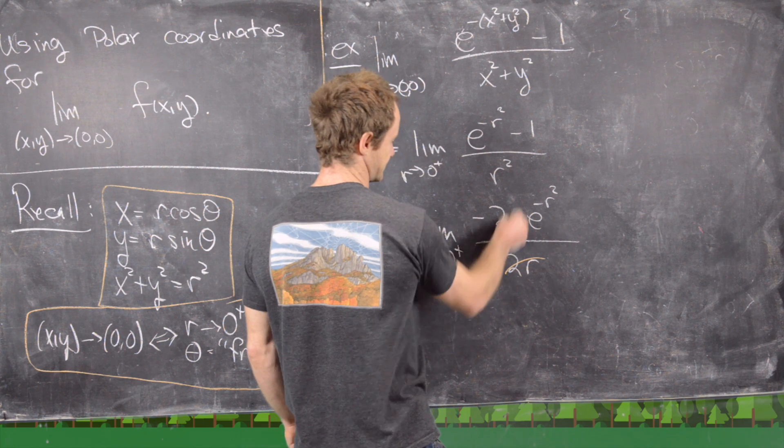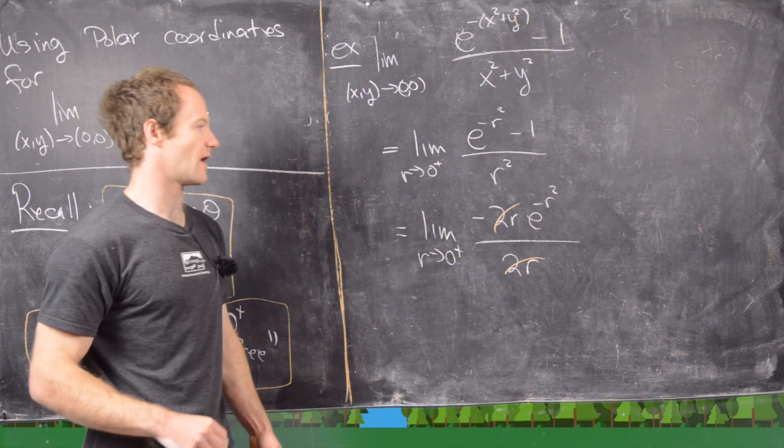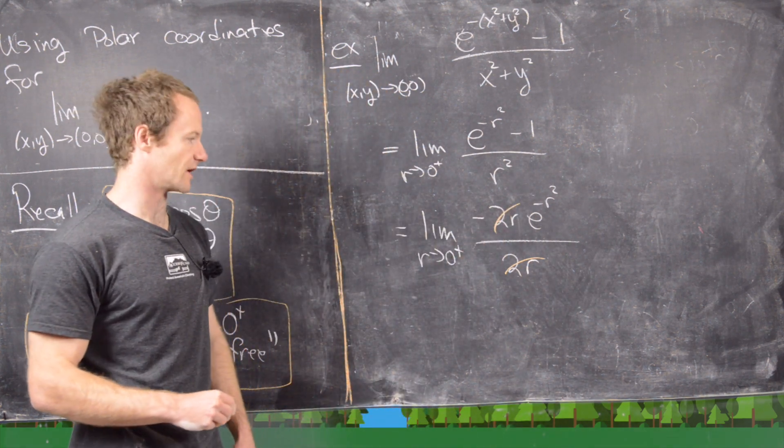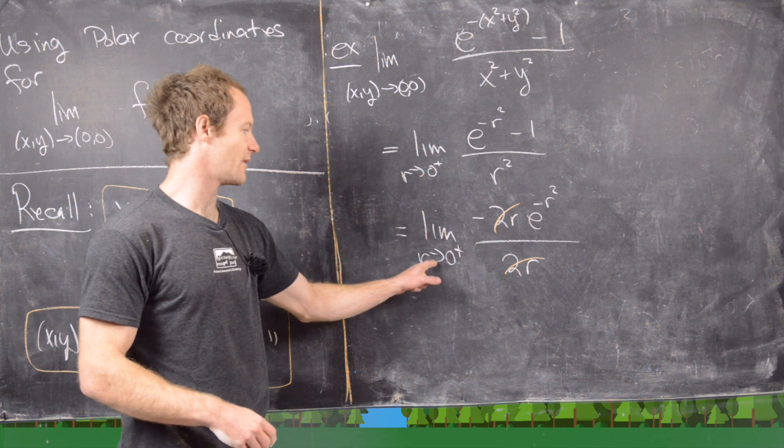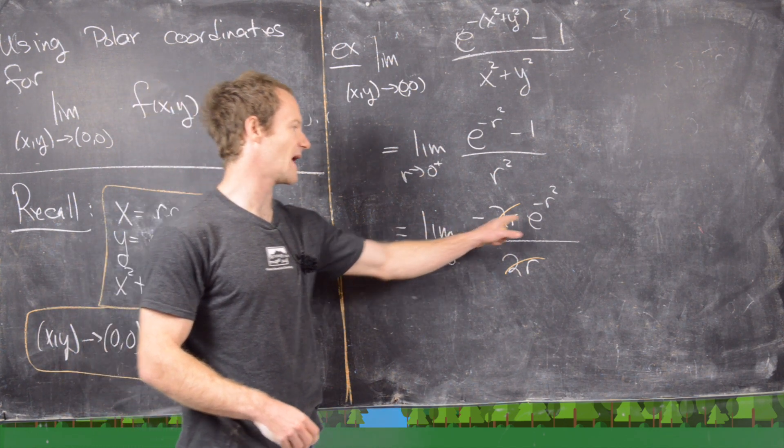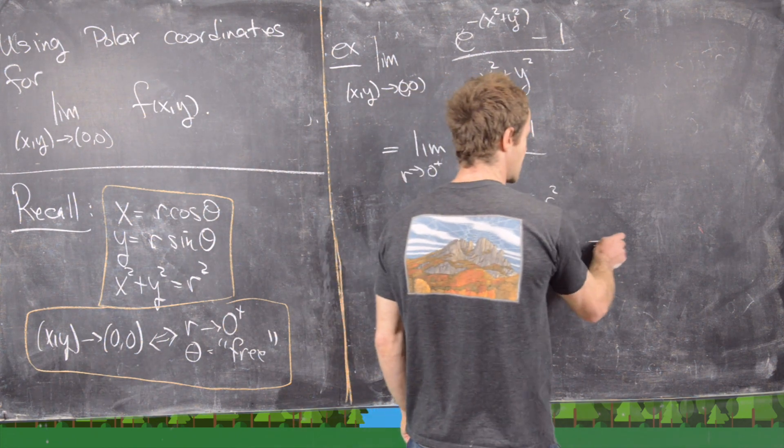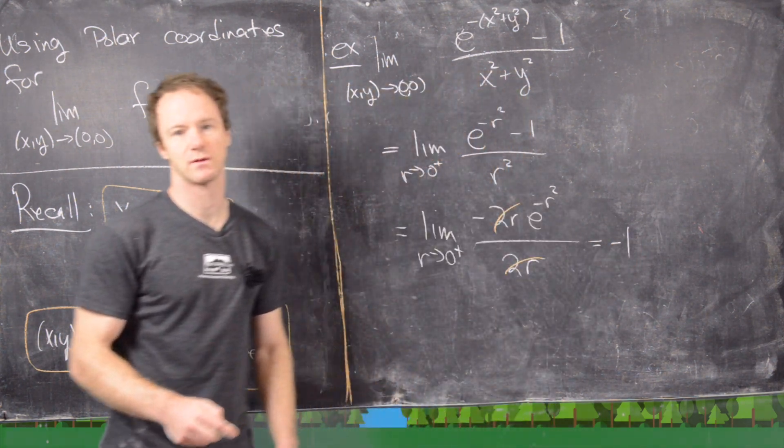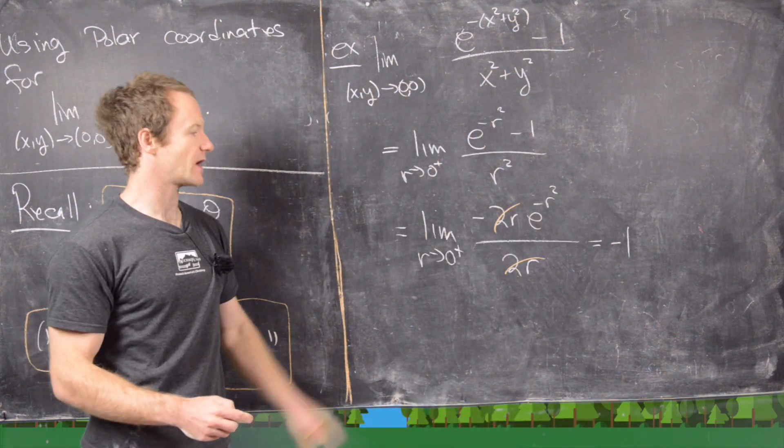But now, notice we can cancel the numerator and the denominator here, and that's going to give us the limit as r goes to zero from the right of minus e to the minus r squared, but that's going to be equal to minus one kind of clearly.